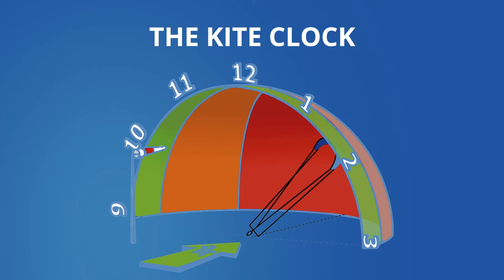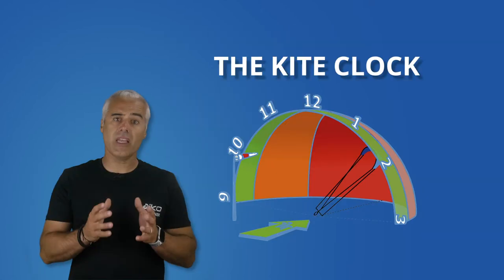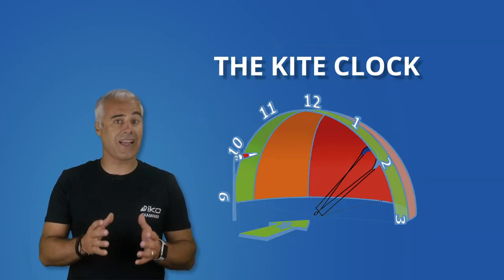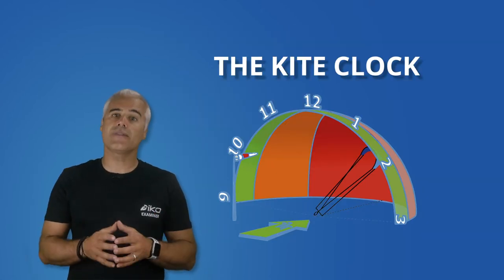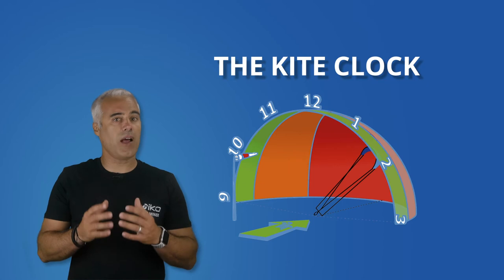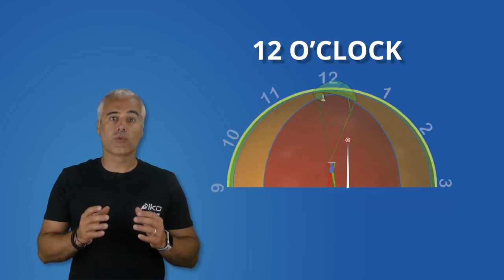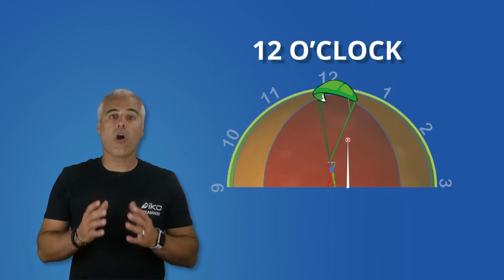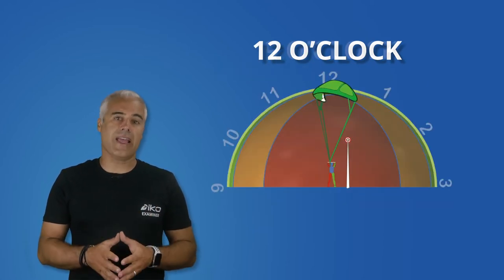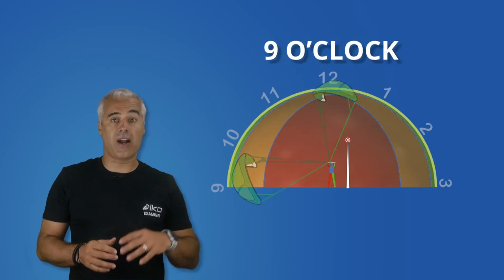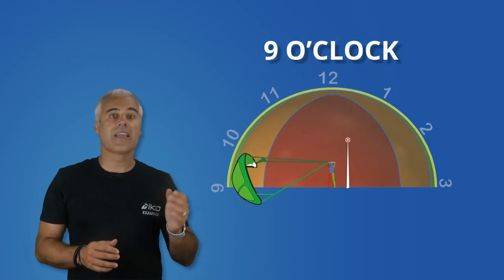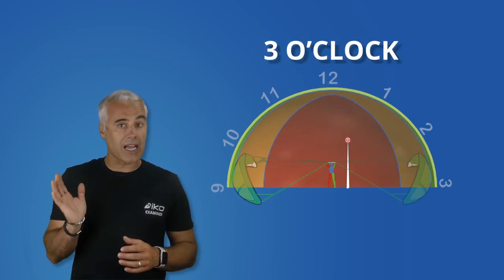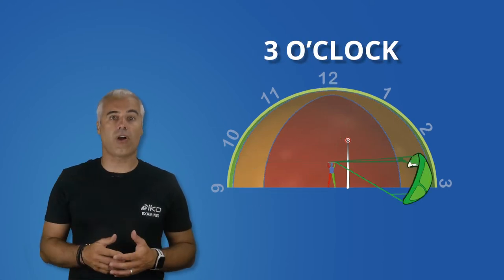The kite clock is used to describe the positions of the kite relative to the rider in the upwind edge of the wind window. 12 o'clock is straight up over the kiter's head. The far left side is the 9 o'clock and the far right side is the 3 o'clock.